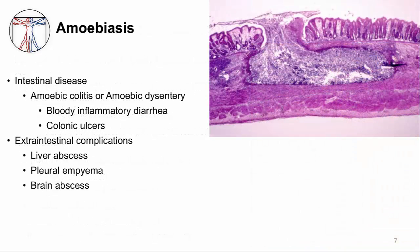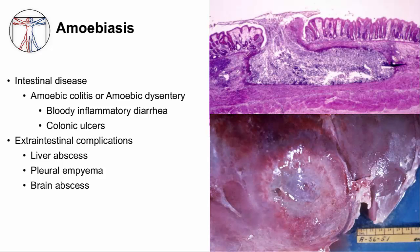Amoebiosis can result in both intestinal disease and extra-intestinal complications. It's a bloody diarrhea due to colonic ulcers, and you can see this in the histology image. The normal glands are interrupted by the shallow ulcer that extends into the submucosa. If amoeba seeds systemic sites, they can cause extra-intestinal complications. The most common is a liver abscess. Unlike bacterial liver abscesses where pus is seen, the material within an amoebic abscess is a brown fluid looking like anchovy paste. It consists predominantly of necrotic hepatocytes. These abscesses can also extend across the diaphragm causing a pleural collection. In rare cases, amoeba can cause brain abscesses.